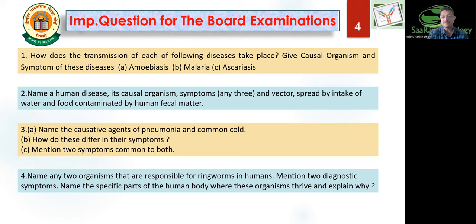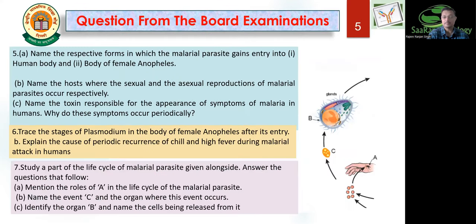Name the causative agent of pneumonia and common cold. How do these differ in their symptoms? Mention two symptoms common to both. You need to differentiate between the symptoms of pneumonia and common cold. Also: name any two organisms responsible for ringworm in humans, mention two diagnostic symptoms, and name the specific part of the human body where these organisms thrive and explain why.